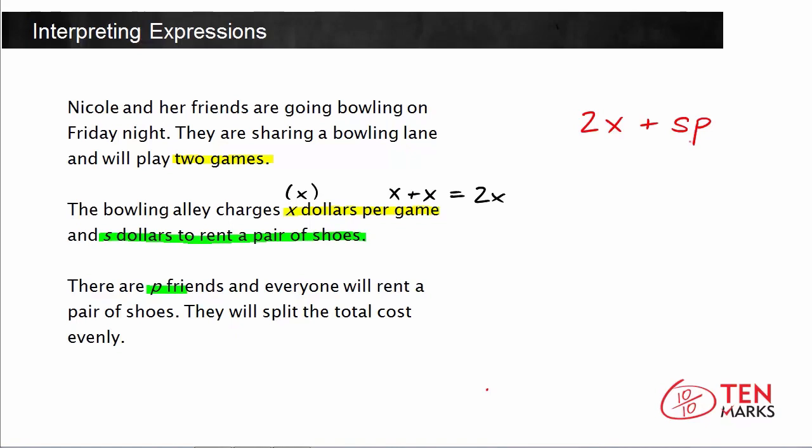Now, if we want to find how much money each person will spend, we know that it says they will split the total cost evenly. So that means we divide the total cost by the number of people. And this is the expression that represents the total number of dollars, or total amount of money, that each person will have to pay for everyone to go out bowling on Friday night.